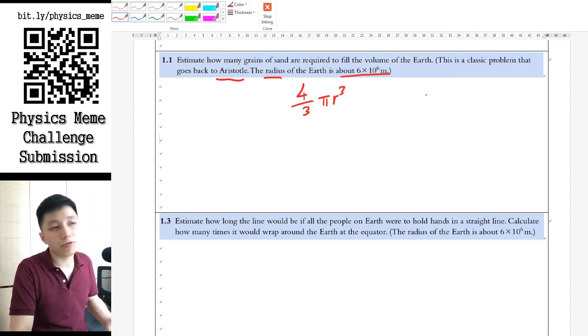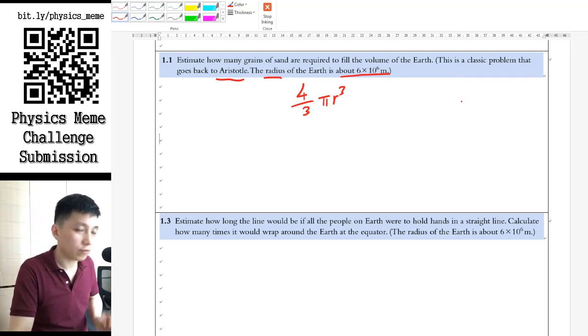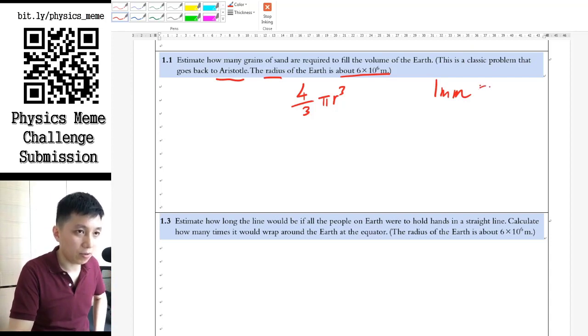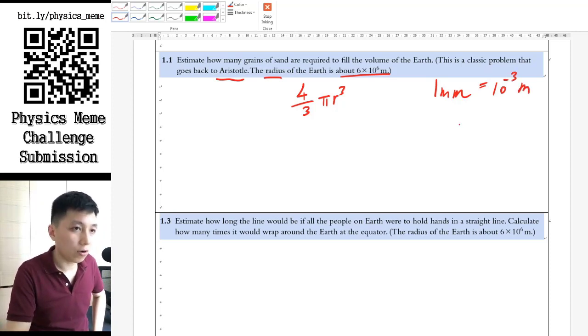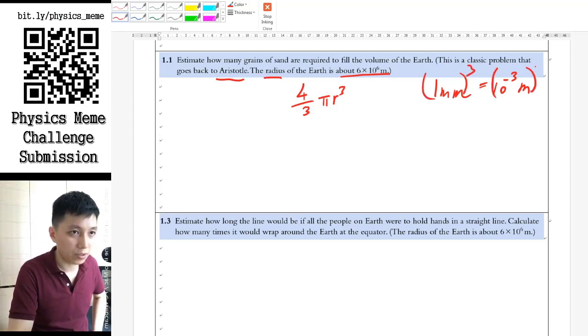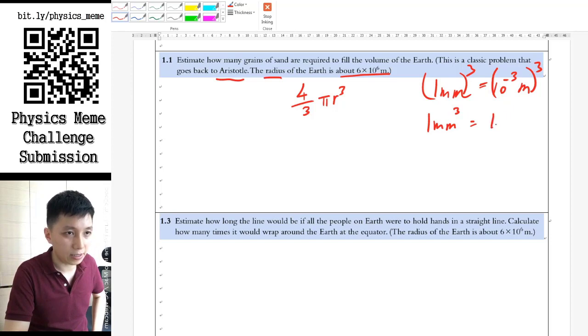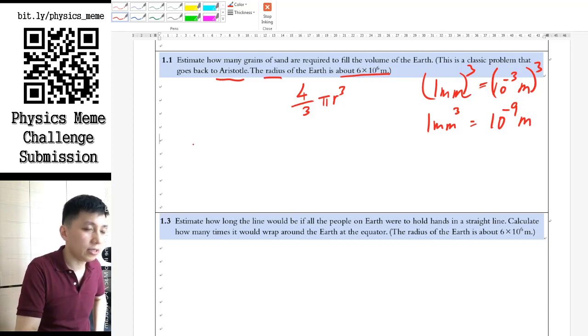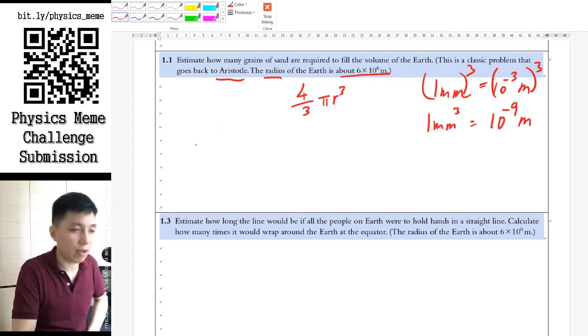And afterwards, you still need to know for one grain of sand, how big it is. So in terms of the size, you may say that one millimeter is roughly the size of the grain of sand. So in that case, that means it is about 10 to the power of negative 3 meters for its length. And so for volume of a grain of sand, it will be cubed for the whole thing. And so that means it is one milliliter cubed, and that is 10 to the power of negative 9 meters for one grain of sand.